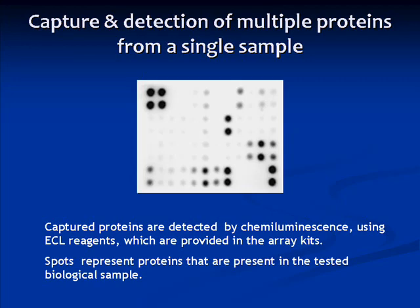Notice that each antibody is spotted in duplicate. Furthermore, the darkness of each spot is directly proportional to the abundance of that cytokine. To identify which cytokines are represented by the visible spots, the array result must be compared to an array map.